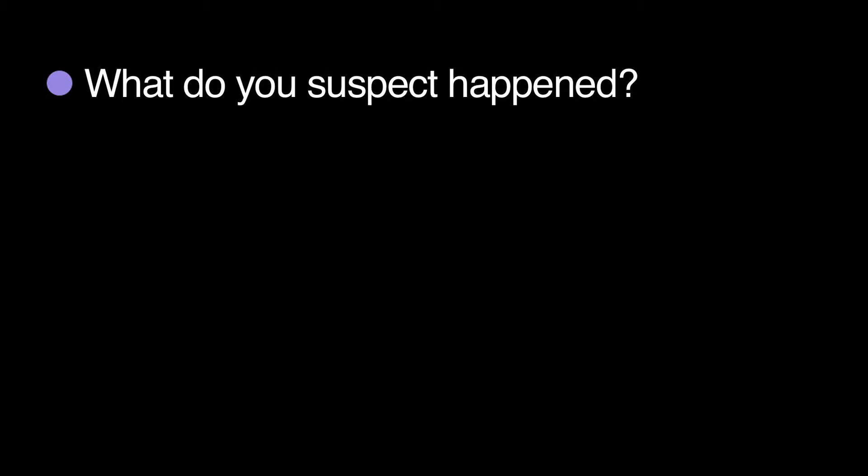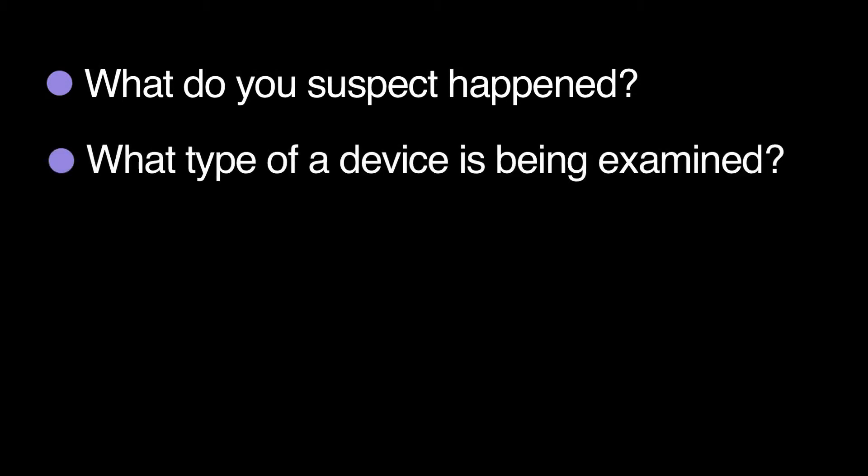To walk through the process of how we would interact with someone calling about a cellular forensics case — the first thing we would ask is what are they after? What do they suspect has happened? Once they tell us that, we know how to approach the investigation better. Then it comes down to what type of device it is, because unlike computer forensics where a device is nothing more than a storage container for data, cell phones are different by make and model in the data they hold and what happens to deleted data. We need to define that to give the client an objective idea of what is even possible.